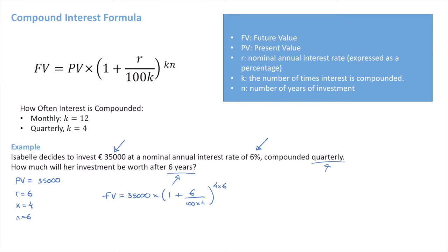We get 35,000 times 1 plus 6 over 400 raised to the power of 24. And simplifying further,